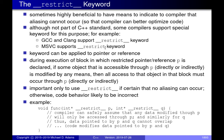You can use the `restrict` keyword anytime you have a pointer or reference, since references have the same aliasing problems as pointers — they're basically pointers in disguise. When declaring pointers or references, you can add the `restrict` qualifier. The rule is: if an object accessible through a restricted pointer P is modified by any means, then all accesses to that object in that block must occur through P. In other words, data accessible through P is not permitted to alias with data accessible through other means.